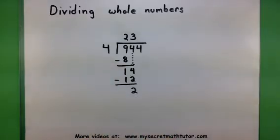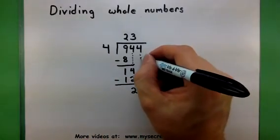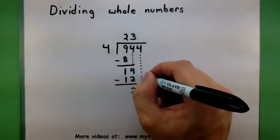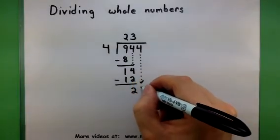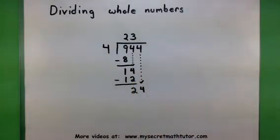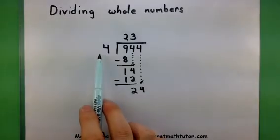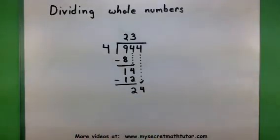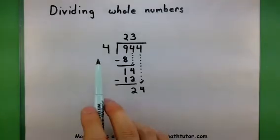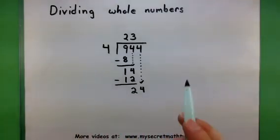So things are looking pretty good. All right, 4 can't go into 2. 2 is too small. So we'll borrow the next digit again to help us out. All right, now how many times does 4 go into 24? I think 6. 4 times 6 is 24.